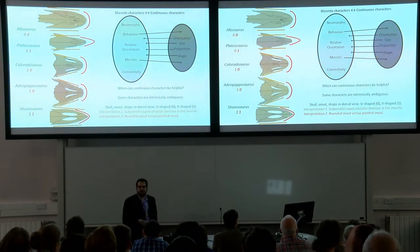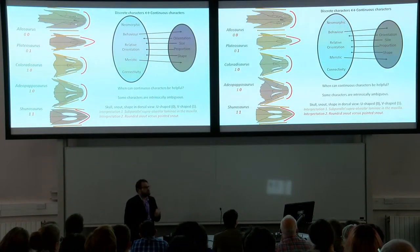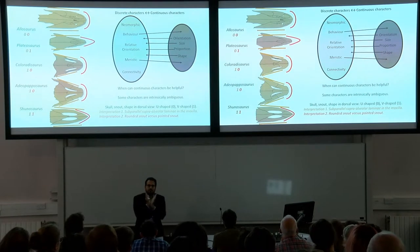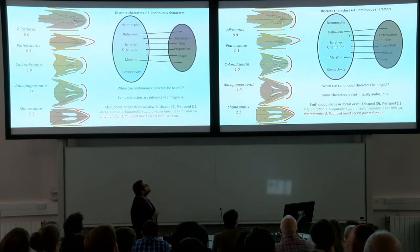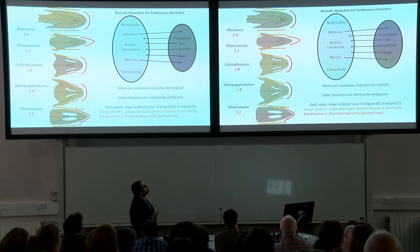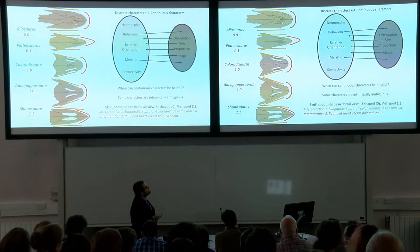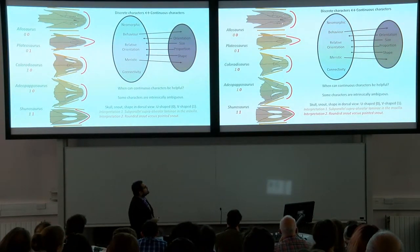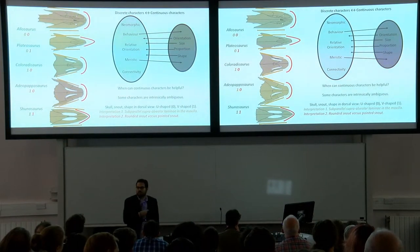A U and a V can be defined in two different ways: a U has a curve and the V has a vertex, or a U has two parallel sides and the V has two intersecting sides. In prosauropods, depending on how you interpret this character — either as a subparallel lamina in the maxilla or a rounded snout versus a pointed snout — you will have disagreements on the scores you give to the same taxon.